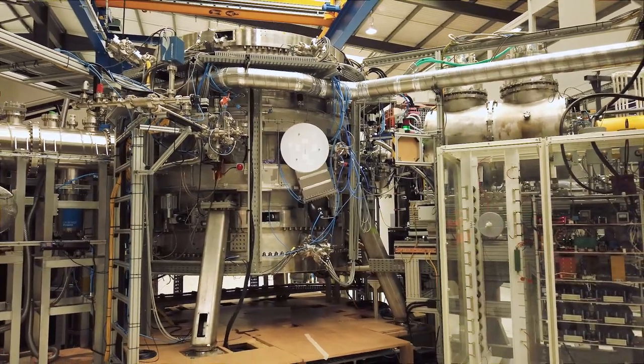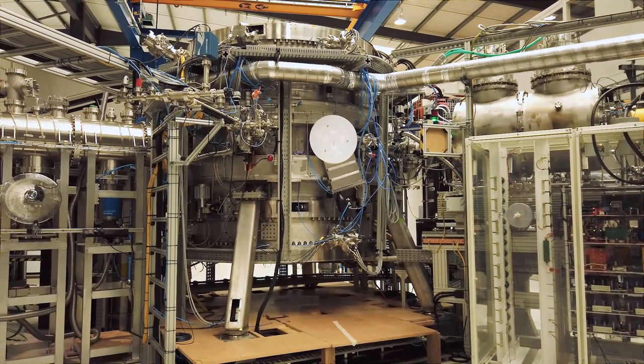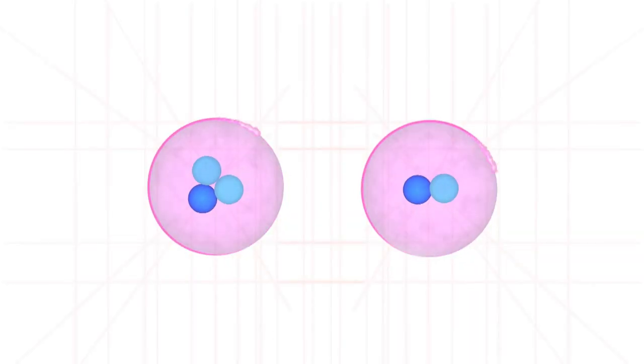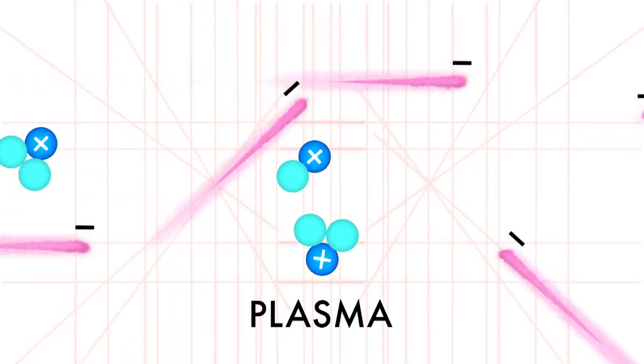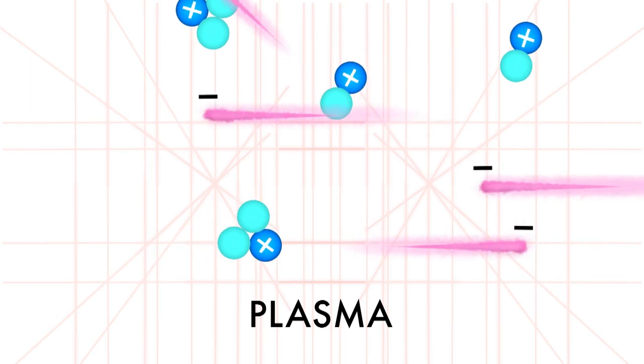One way to produce plasma in a vacuum vessel is by running a current through a gas. For research we use hydrogen, but in a fusion power station they'll use two varieties of hydrogen, deuterium and tritium.